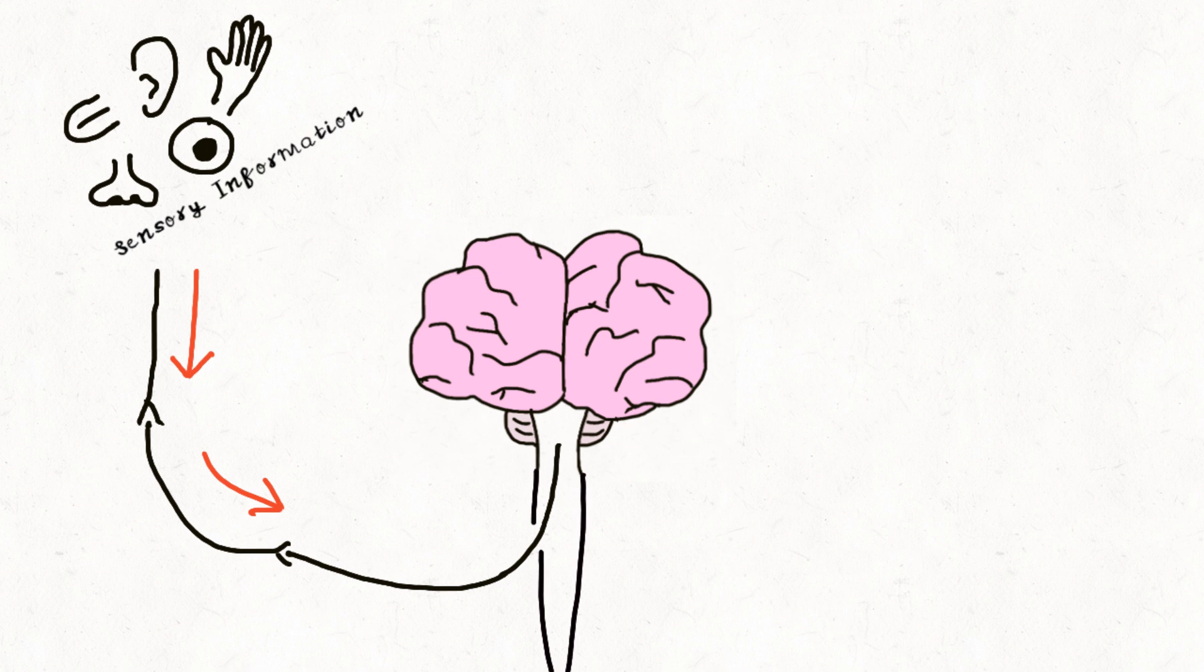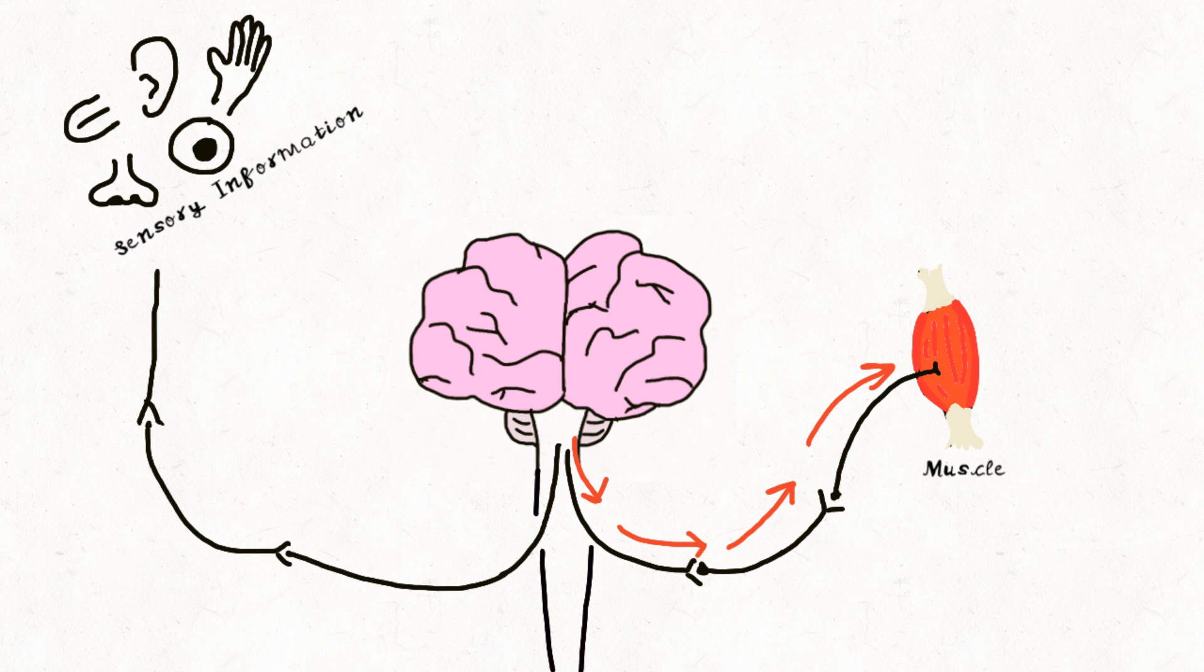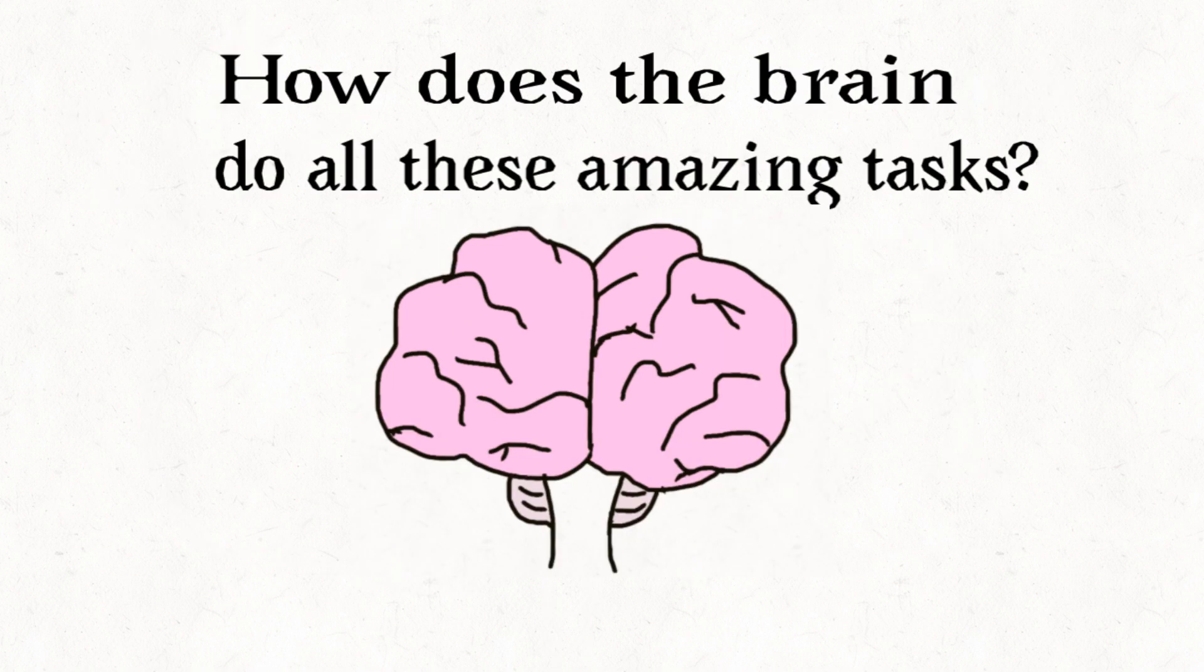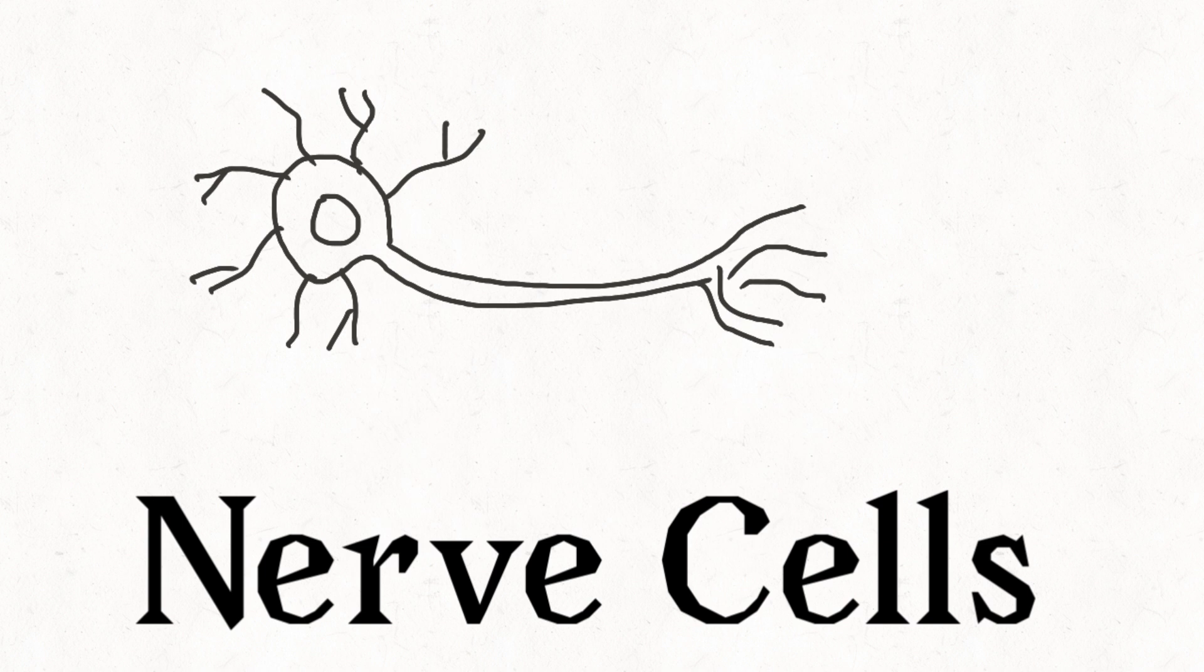The brain is responsible for processing sensory information. The brain also sends electrical signals to create motor commands, in other words, make your body move. So how does the brain do all these amazing tasks? Nerve cells.